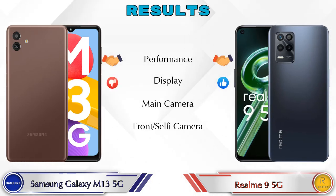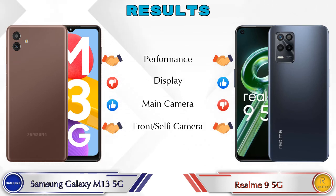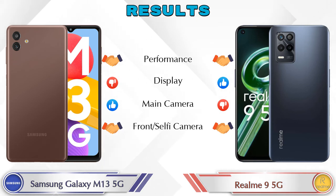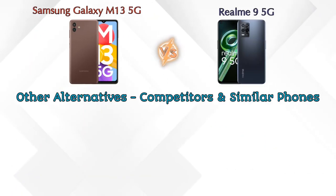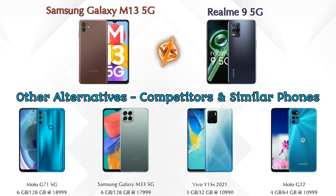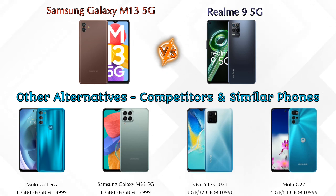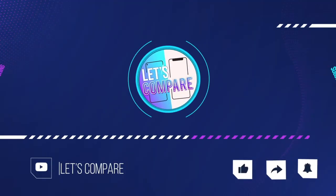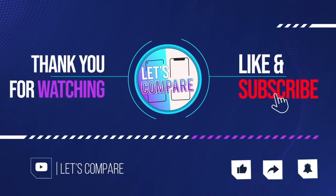Finally, talking about results: in performance both phones are the same; in display, Realme 9 5G is ahead; in the main camera, Galaxy M13 5G is ahead; and in the front selfie camera, both phones are the same. For other competitors at the same price, there is Moto G71 5G, Samsung Galaxy M33 5G, Vivo Y15s 2021, and Moto G22 4G. Details about these competitors are available in the description. If you like our video, please like and subscribe — thanks for watching!